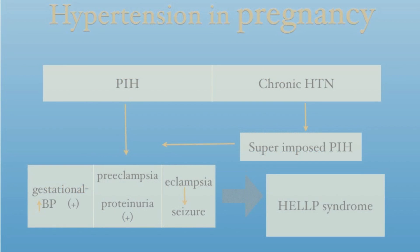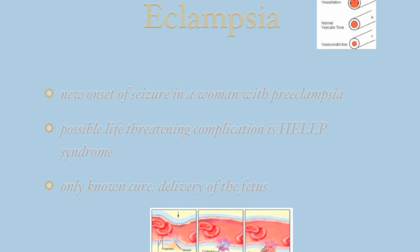This slide gives you a depiction of the difference between PIH and chronic hypertension and how it can evolve. Eclampsia is worsening preeclampsia — a progression that causes neurologic irritability resulting in seizures. Oftentimes they'll start in the face with twitching, and then progress down the body so that there is tonic-clonic activity.